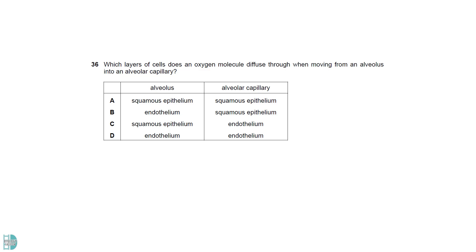The alveolar wall is made up of squamous epithelium. Squamous epithelium is characterized by thin and flat cells. Endothelium is a specialized type of squamous epithelium that lines the inner surface of blood and lymphatic vessels.